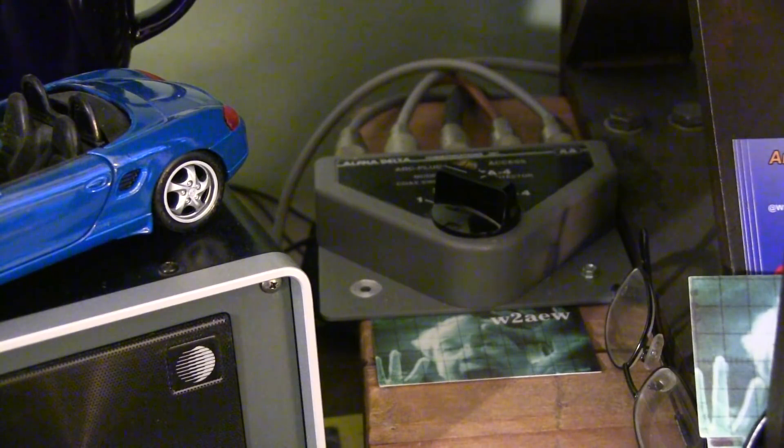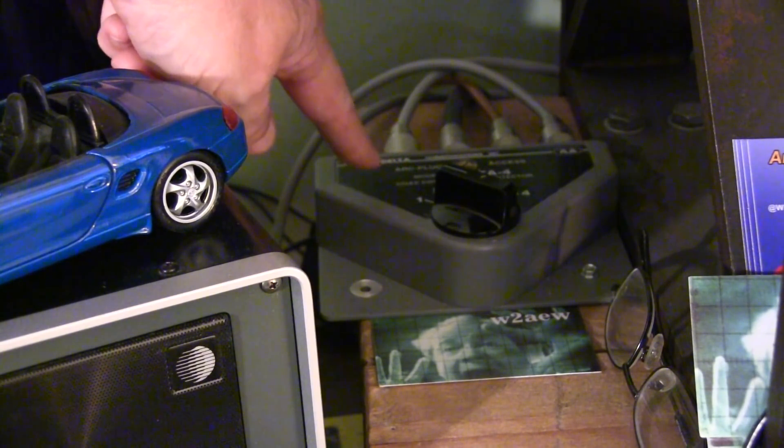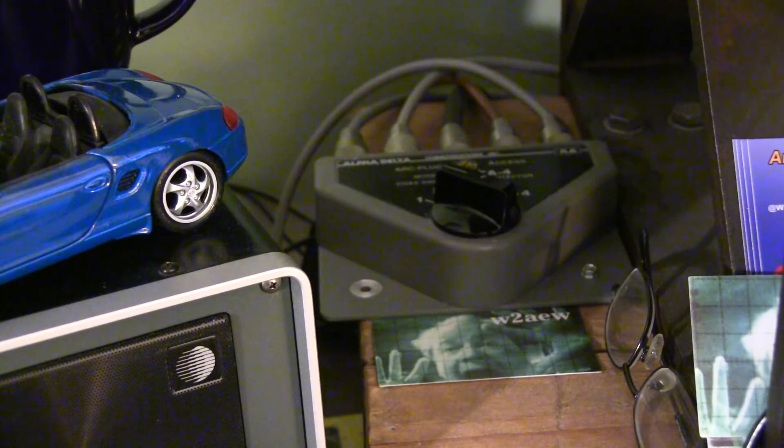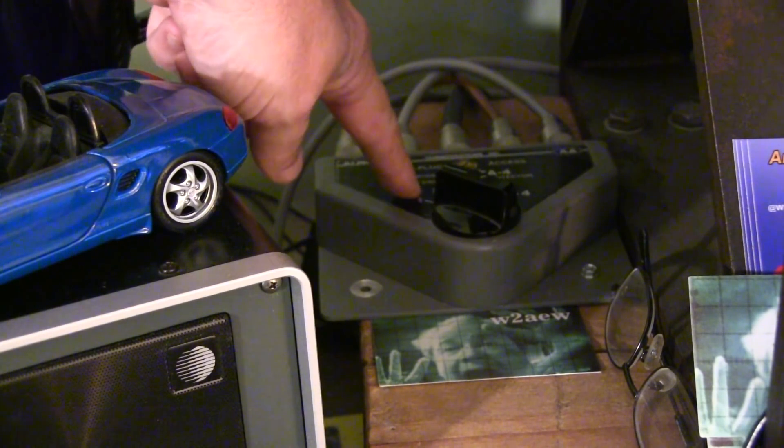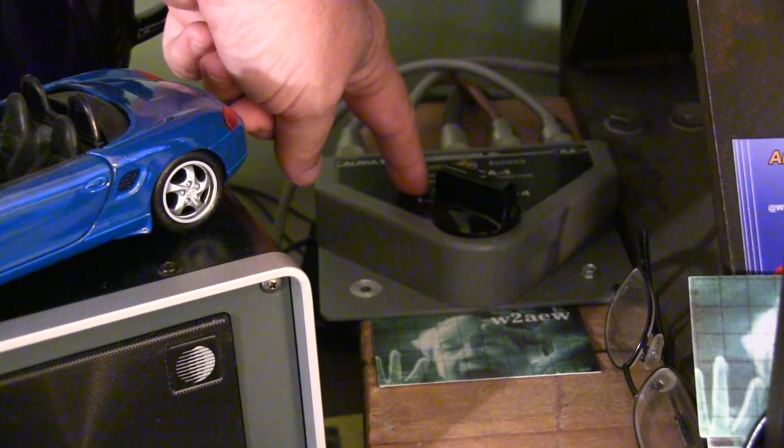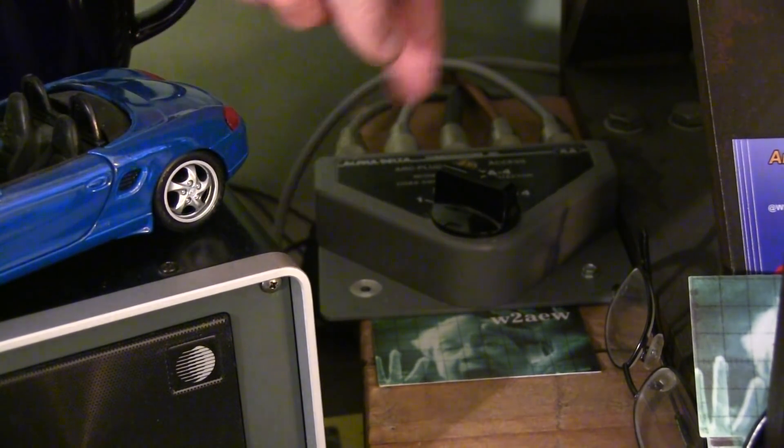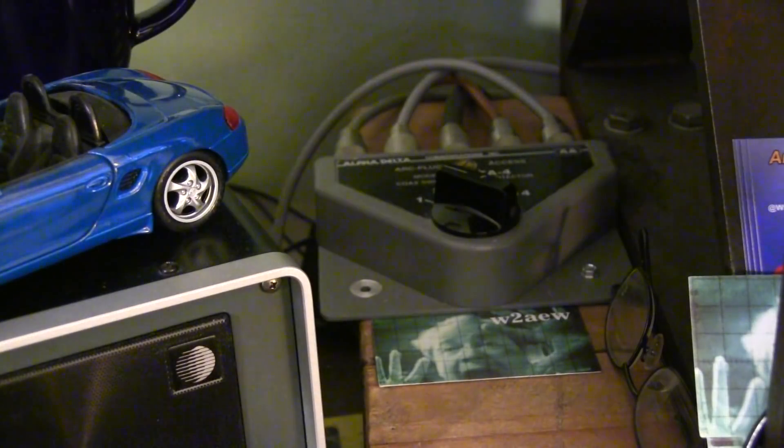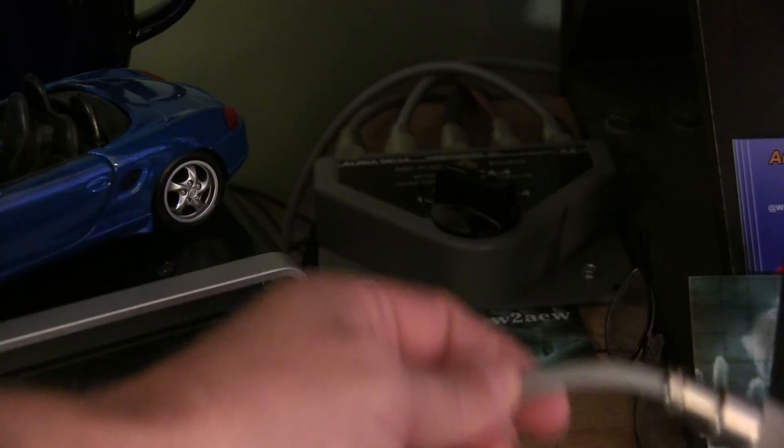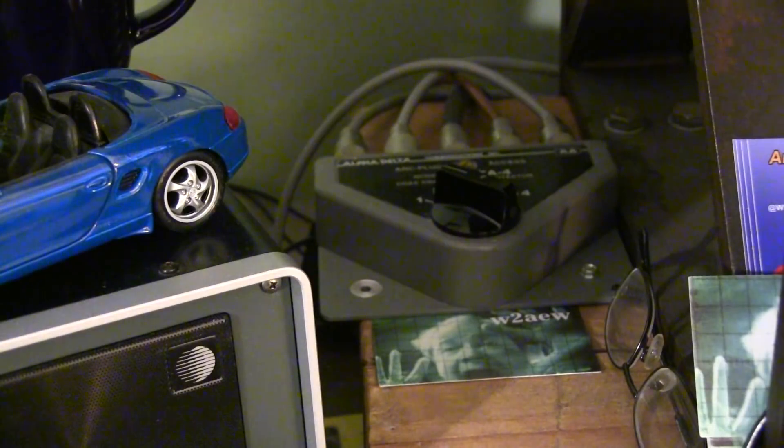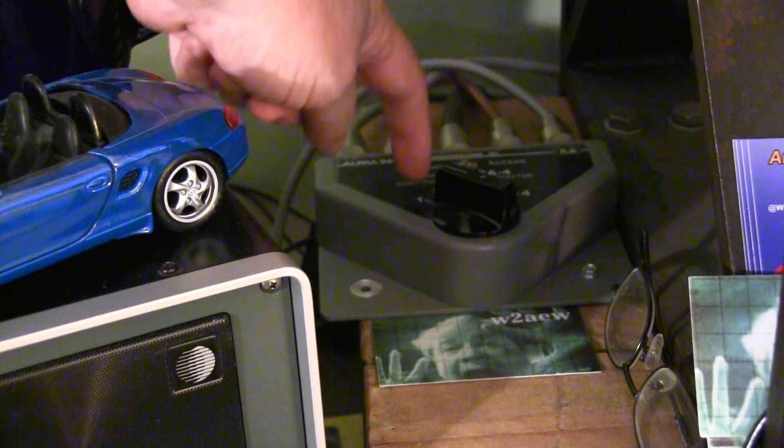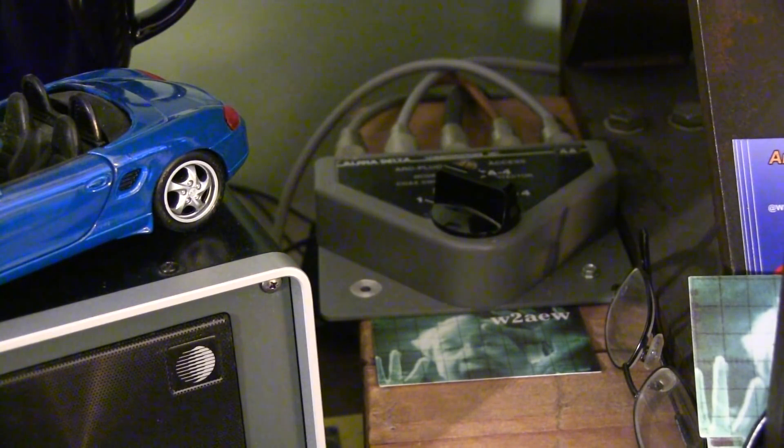Now for the final test, let's actually take a look at the switch I actually use in my station. I've got a four position alpha delta down here that I switch between four different locations. Position one is my Kenwood TS870. Position two is my old 830. Position three is this little Yaesu shortwave receiver. And then position four, I've got coming out to a piece of coax that I keep here on the bench for when I'm testing radios or I want to bring a little portable rig up here or something like that. So let's take a look at the isolation between port one and two between the two HF rigs in my station.